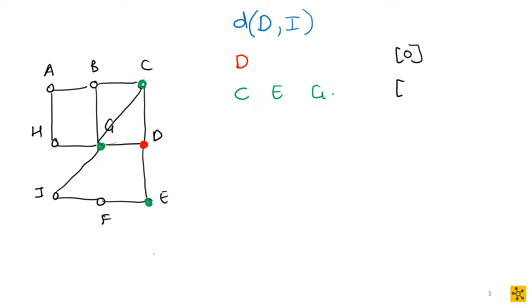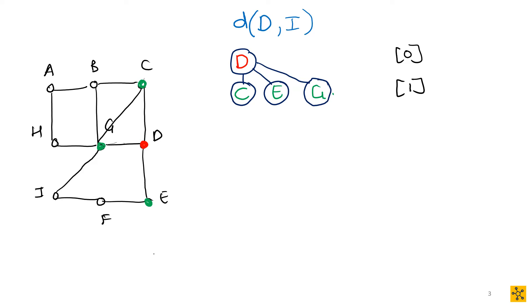Now the next level gets length one. Using the breadth-first search, we look at all adjacent vertices to D that haven't been activated. In alphabetical order, that's C, E, and G. We activate them all and give them a length of one. So D to C is length one, D to E is length one, D to G is length one. Your lengths and levels correspond because there are no weights currently.